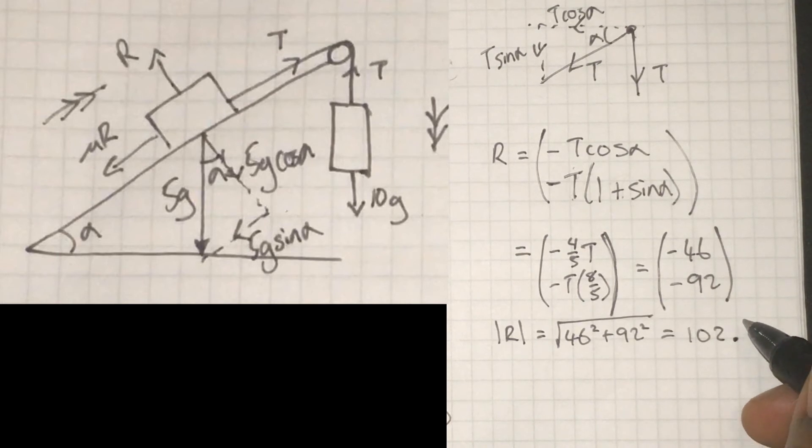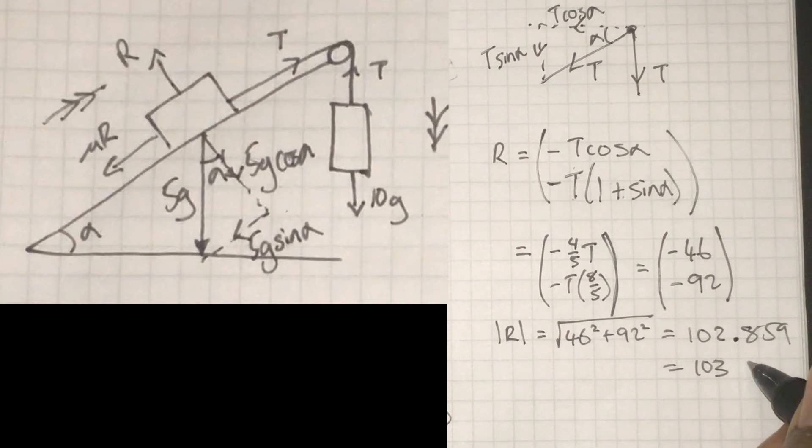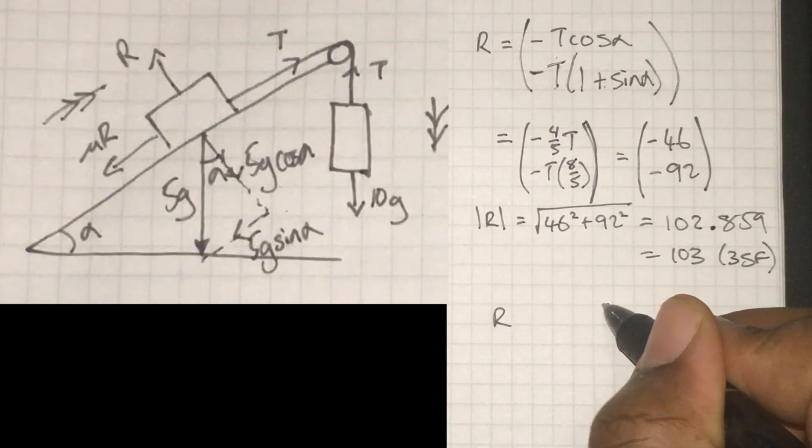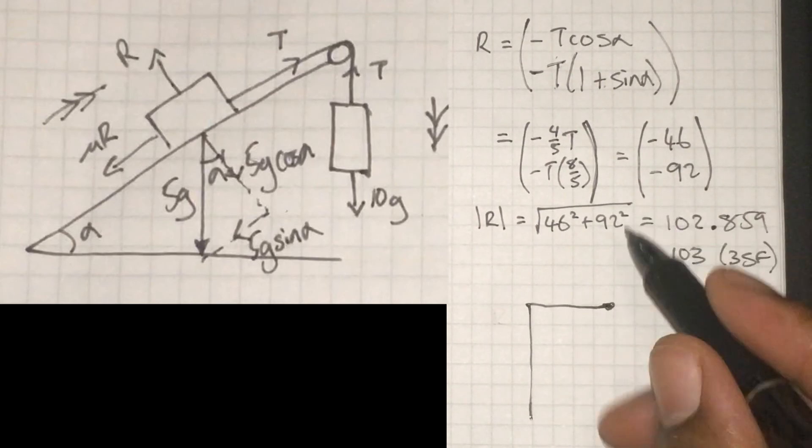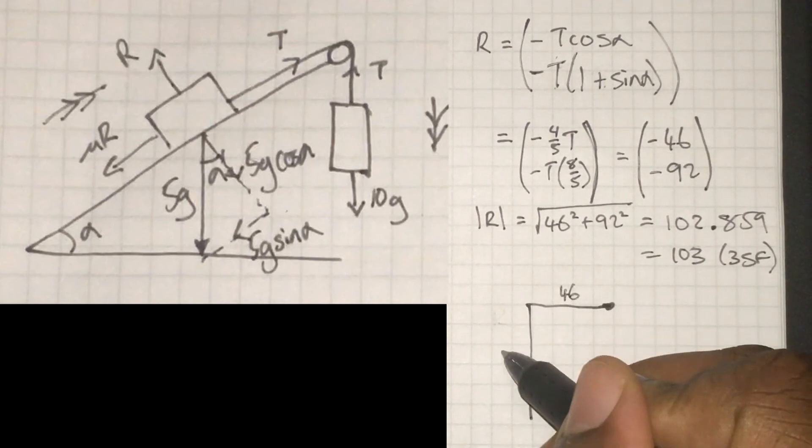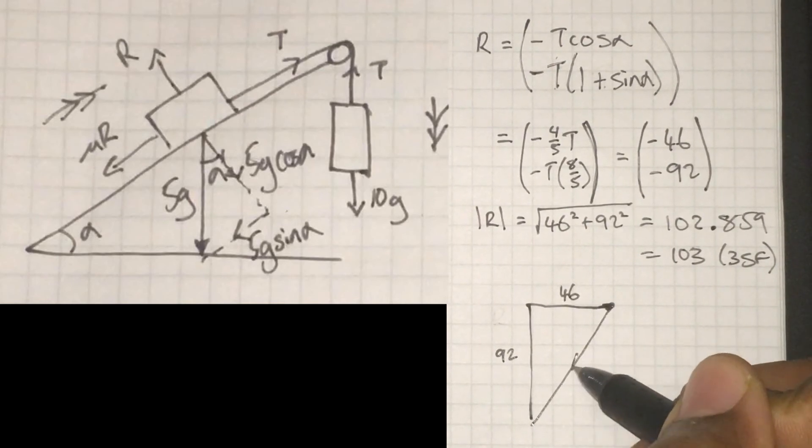So the magnitude of R with a bit of Pythagoras, 103 to three significant figures. Let's take a look at what this vector looks like. So we're moving to the left and we're moving down. Move to the left by 46 and down by 92.